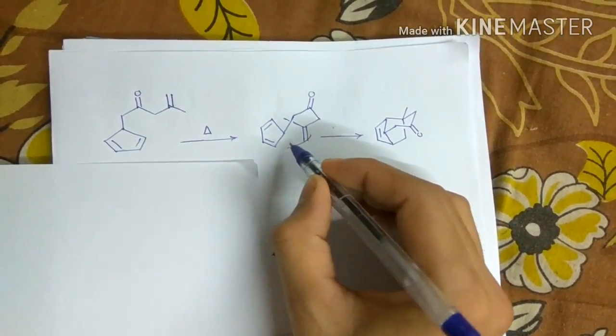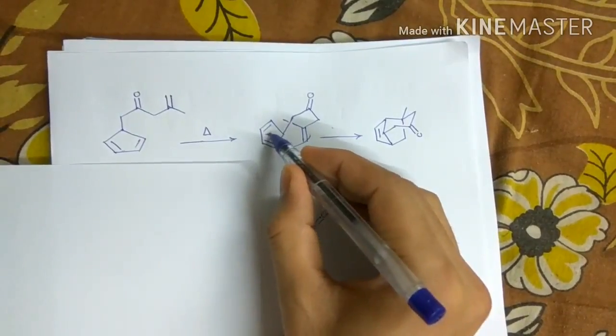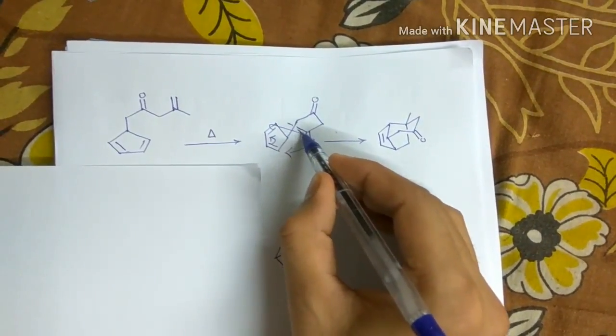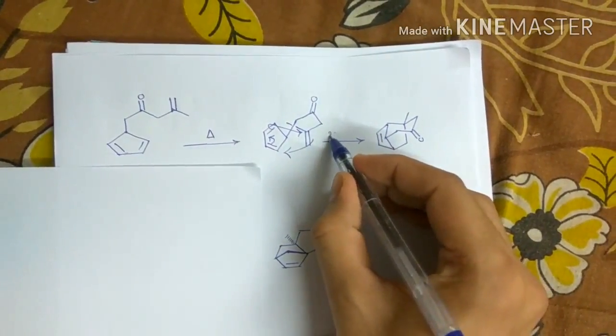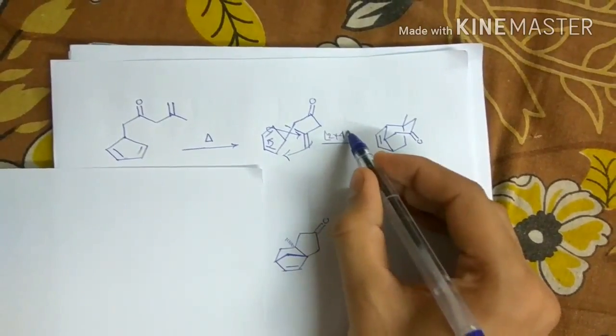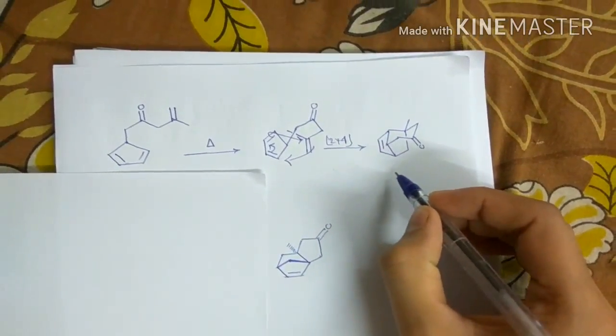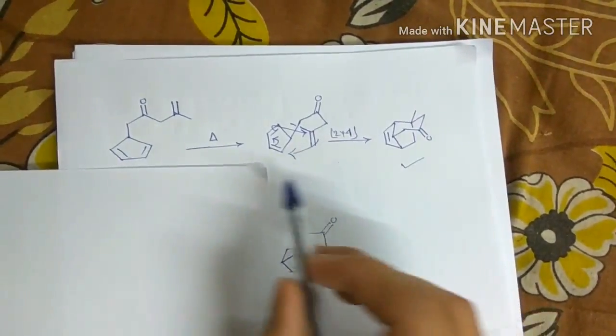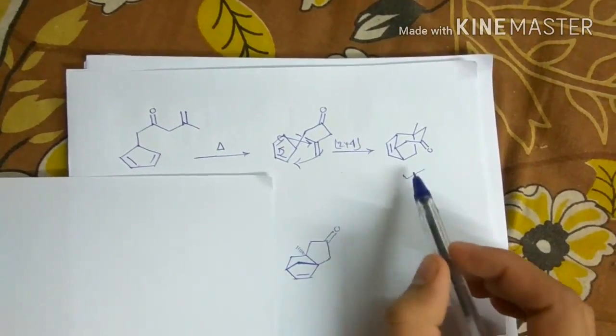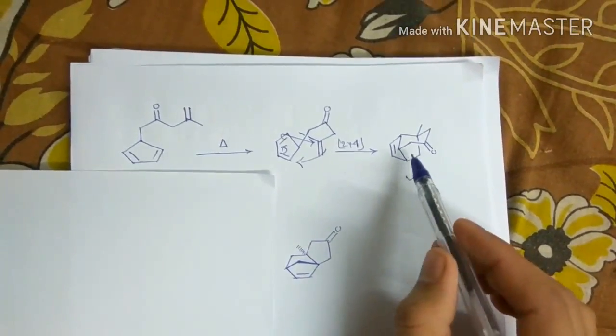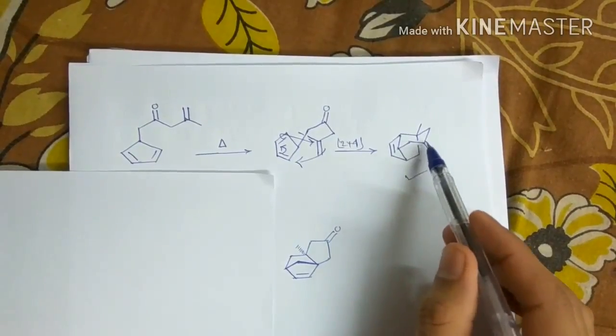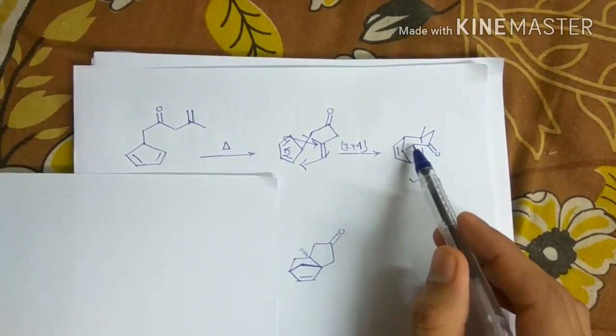2 plus 4 cycloaddition should give this product from Diels-Alder reaction. And this product looks beautifully stable. This is a chair form of 6-membered ring.